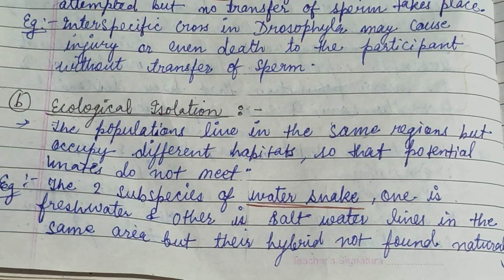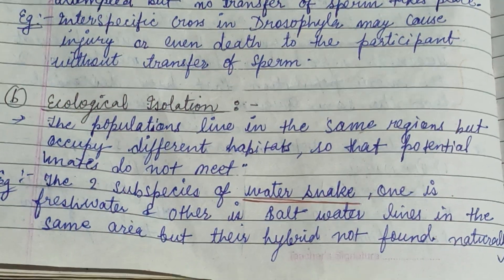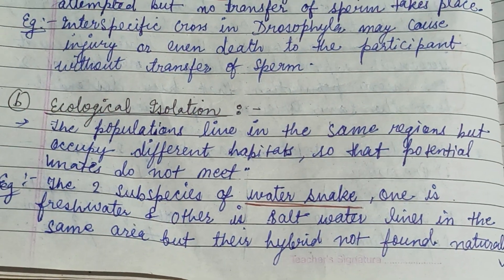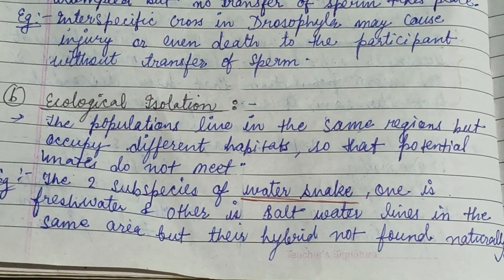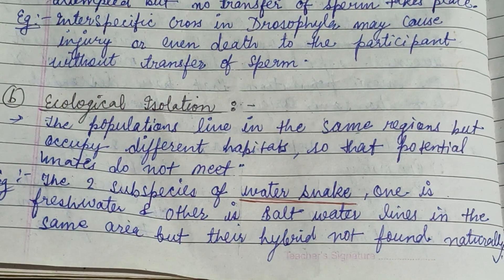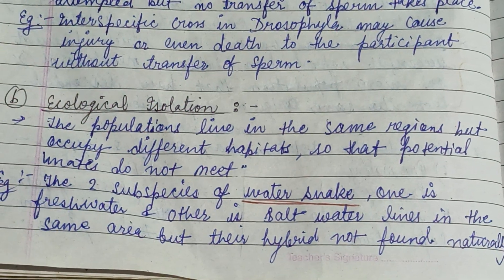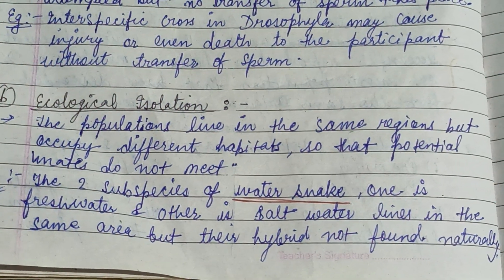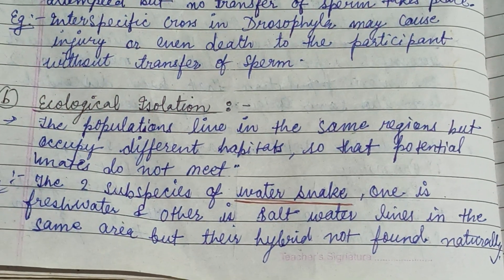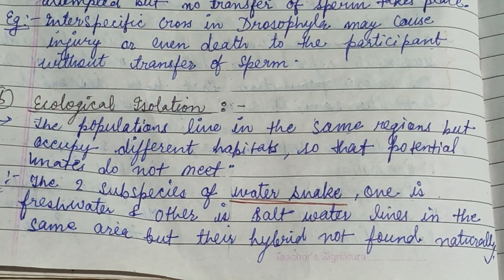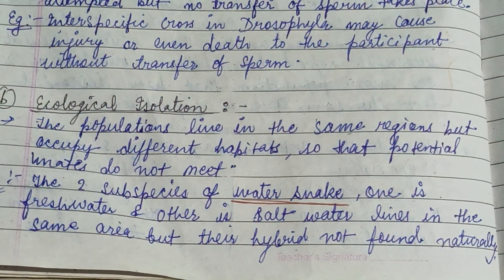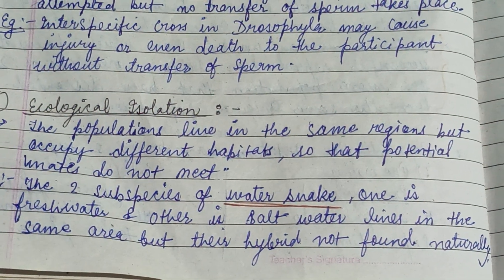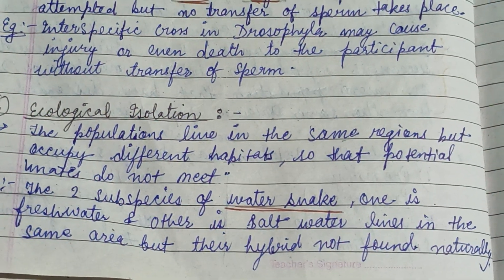Ecological isolation involves different habitats, so potential mates do not mate. There are two subspecies of the water snake — one is the freshwater and the other is the saltwater — which live in the same area.